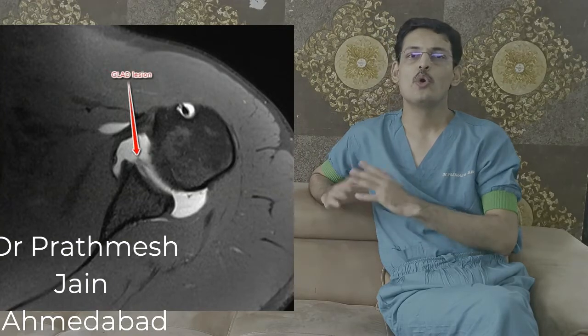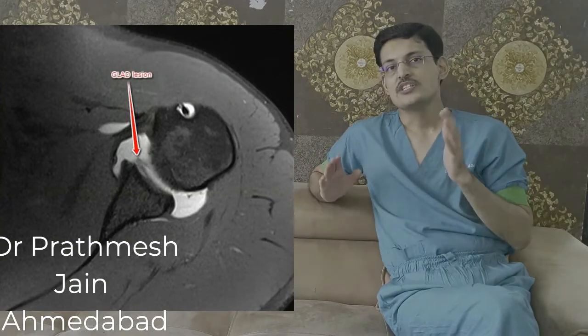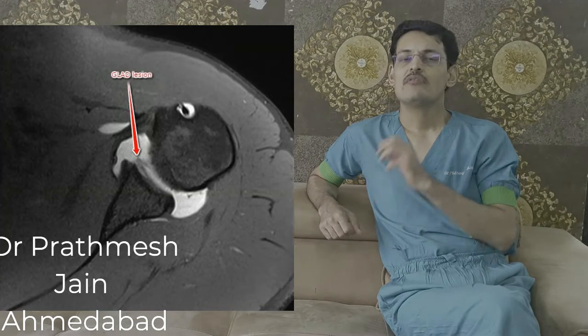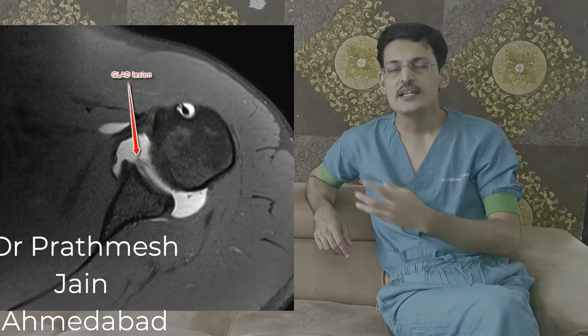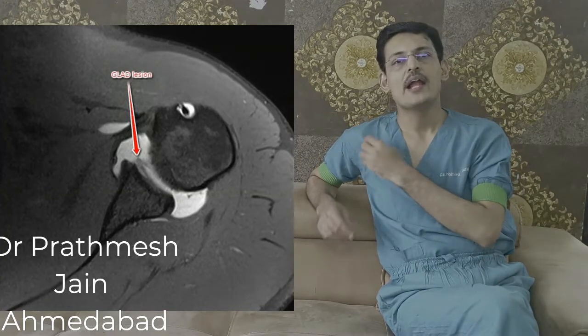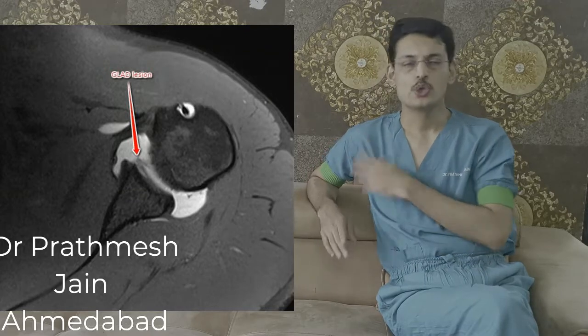In this particular injury, instability is not the predominant complaint as in the Bankart lesion — pain is the most common symptom. The most common presentation is a global and diffuse kind of pain, seen in two-thirds of patients. In one-third of patients, you might see pain which is more on the anterior aspect of the shoulder.